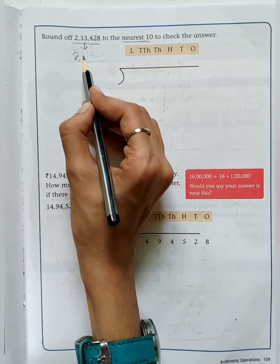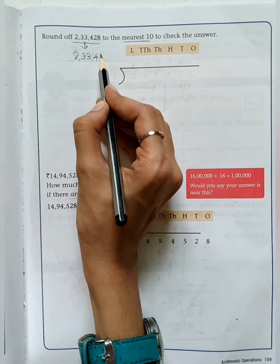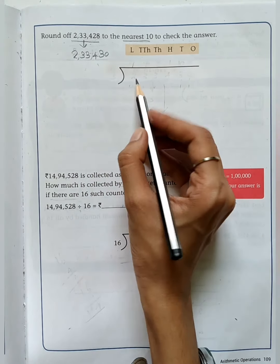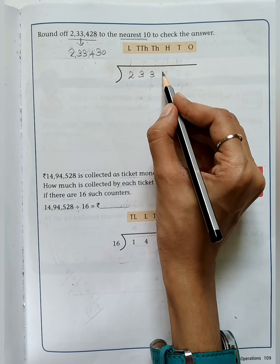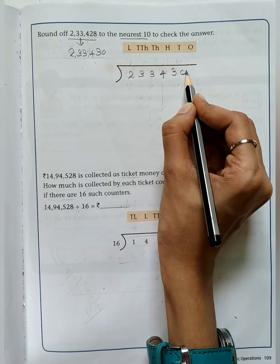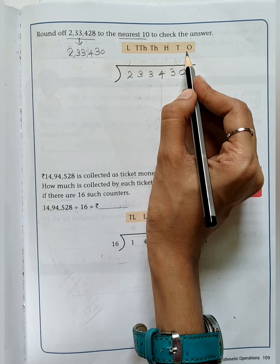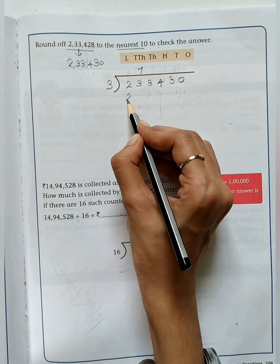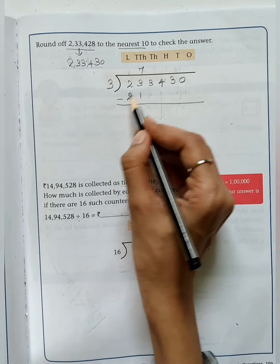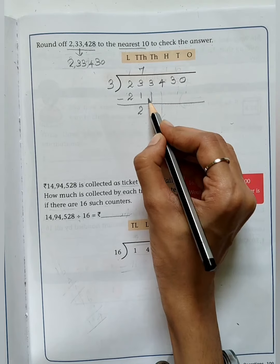Round off 2,33,428 to the nearest 10 to check the answer. We have to round off the digit in the 10's place and underline the digit in the 1's place. After that you got the answer is 2,33,430. Now don't bother about the place value. We are going to divide this number by 3. How many 3's are in 23? Again 21. 7 3's are 21. After subtracting you got 2.